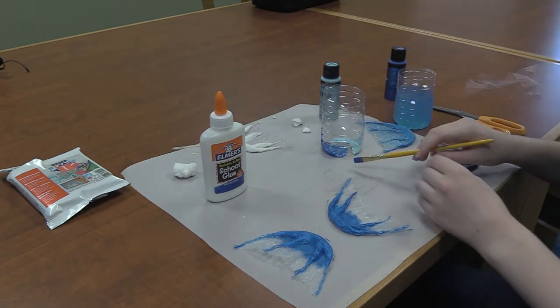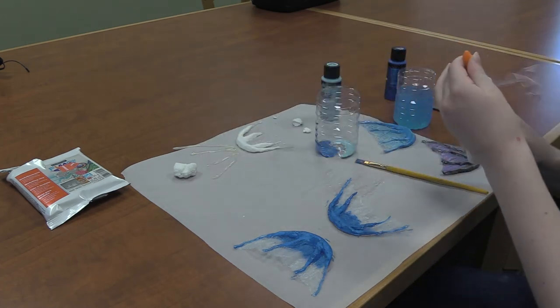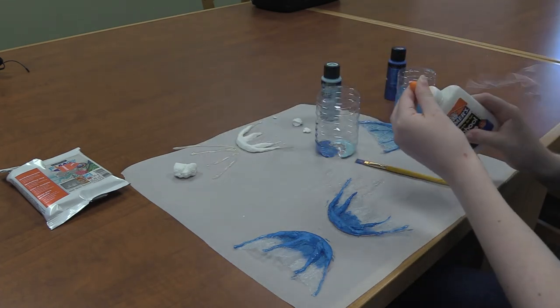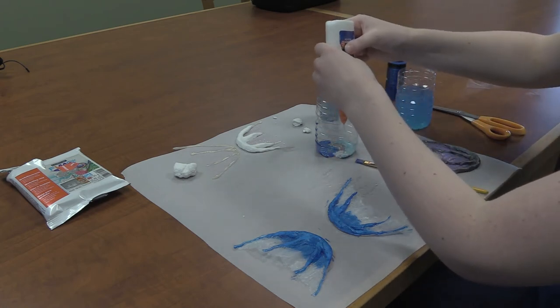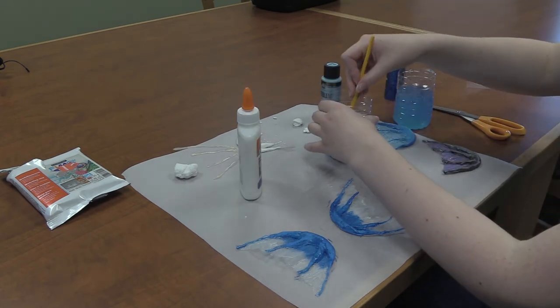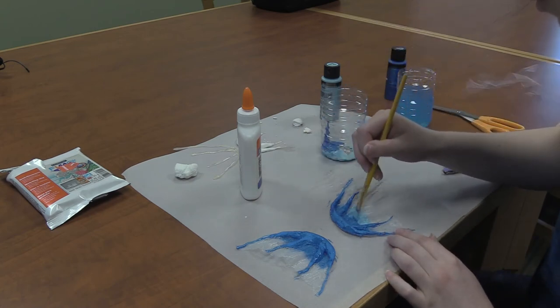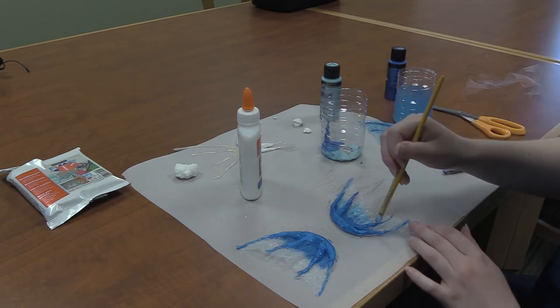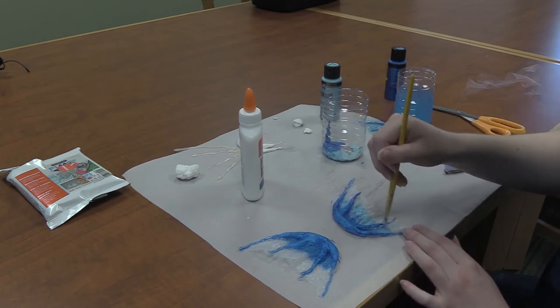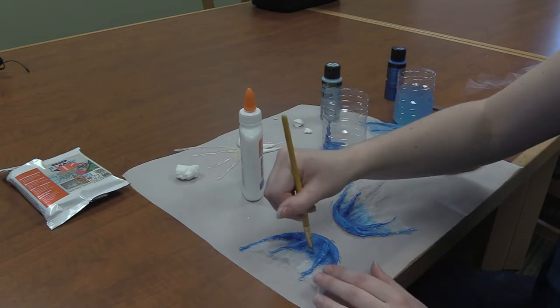If you want for an extra touch, you can add a different shade of the color you're working with, or maybe a complementary color. For these, I'm going in with a little bit lighter blue. And I'm blending it in, letting a little bit overlap with where I put the darker blue on the fins, so they can start blending together.